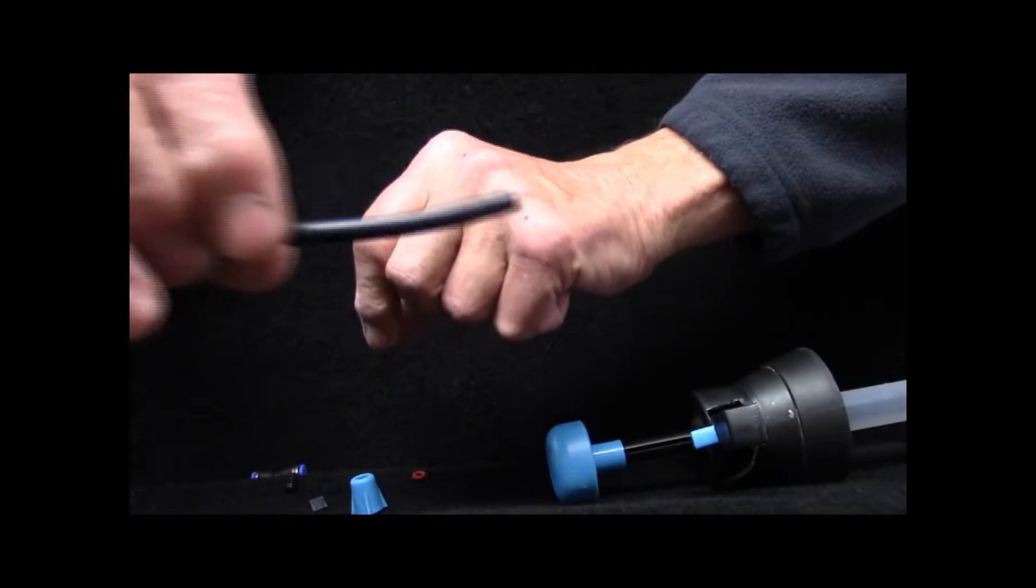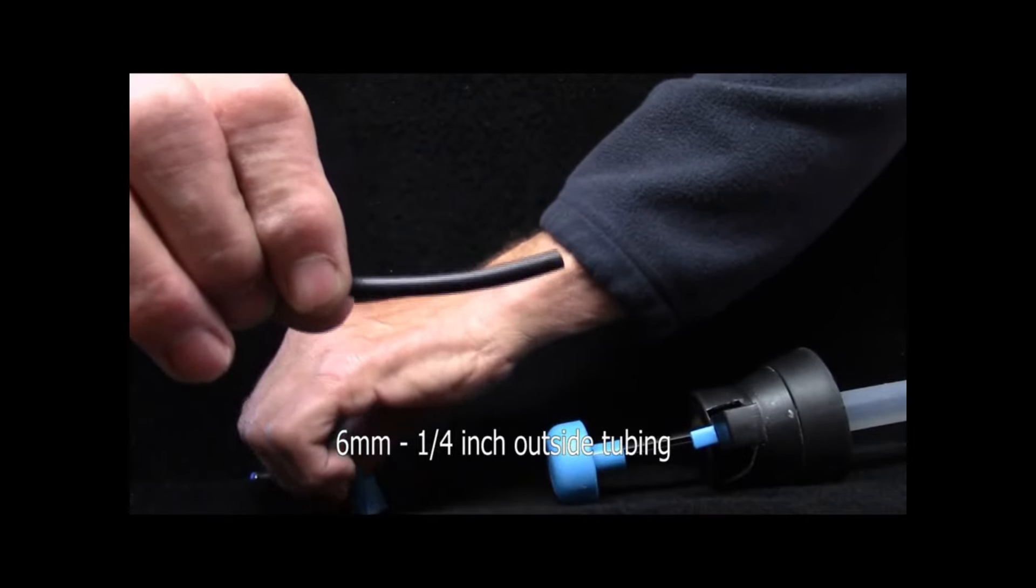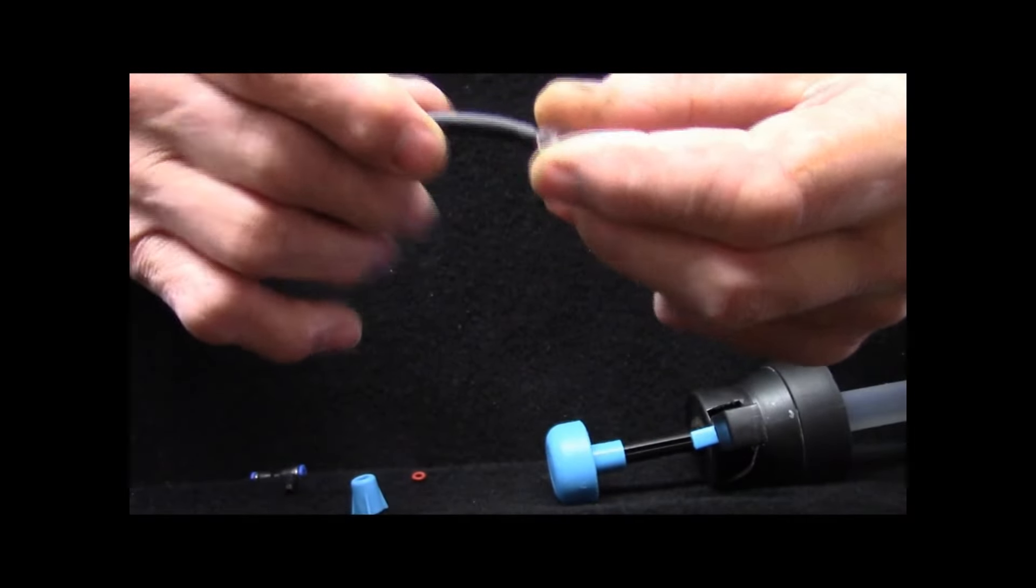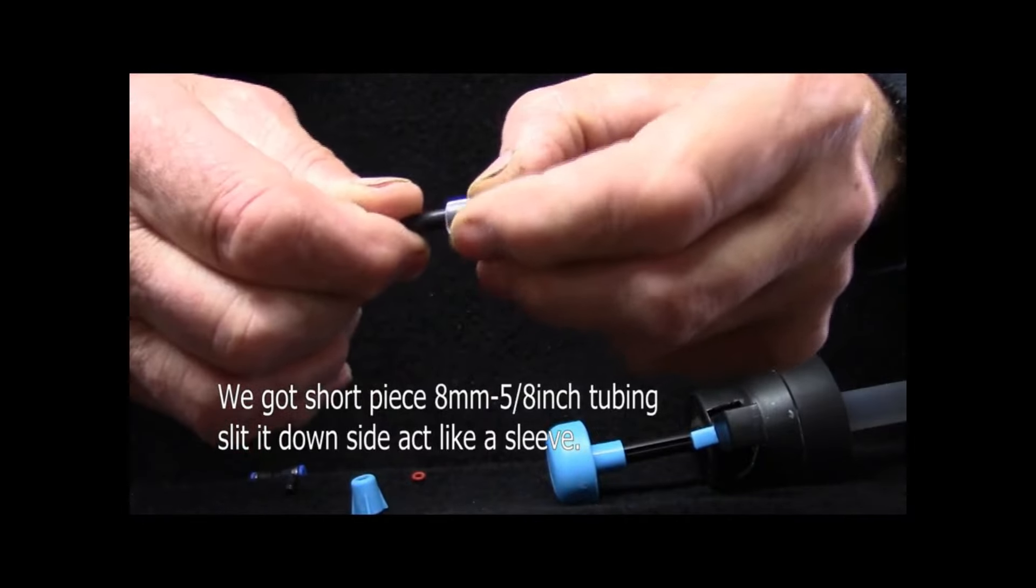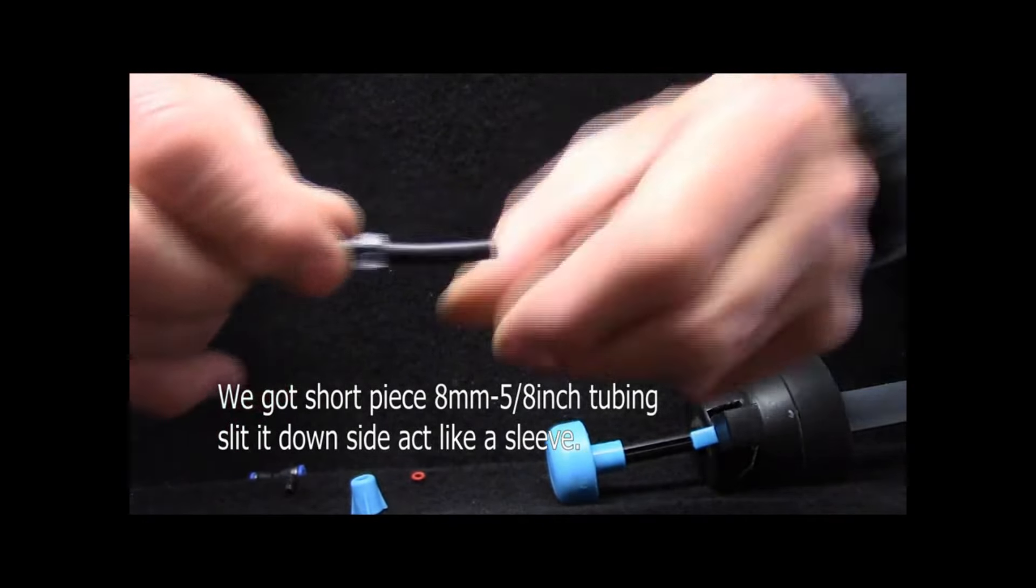We've got some tubing which is 6mm also. And what we've done, we've got an 8mm clear tubing cutter piece and slid it down the side to act as a sleeve.